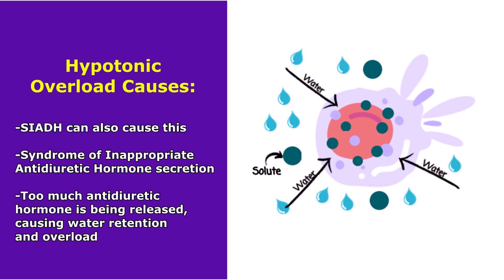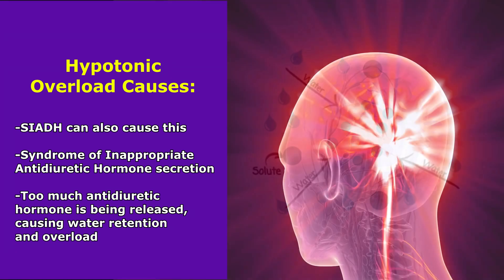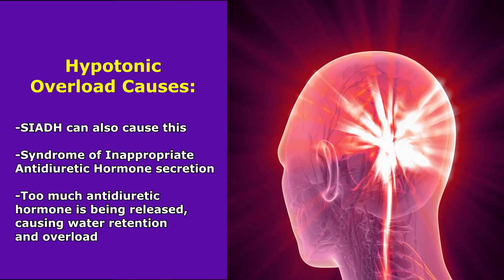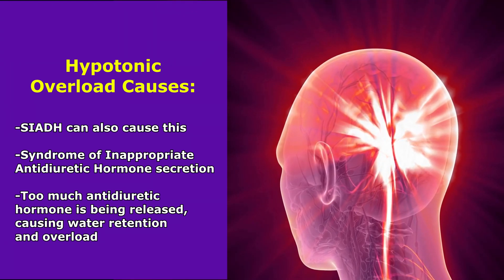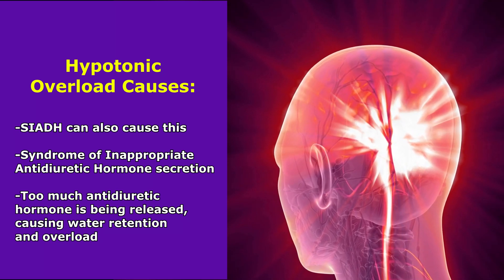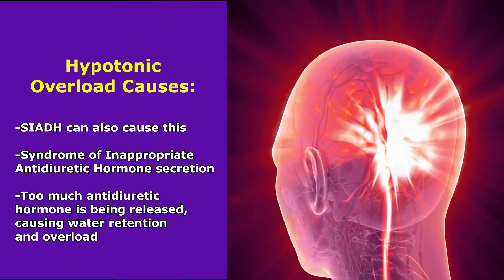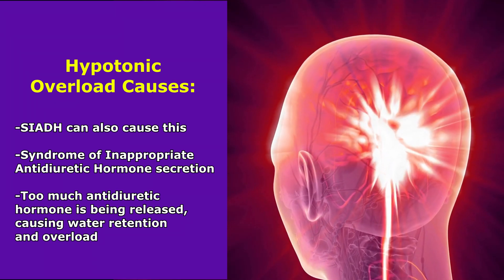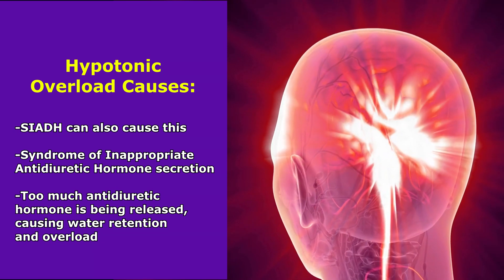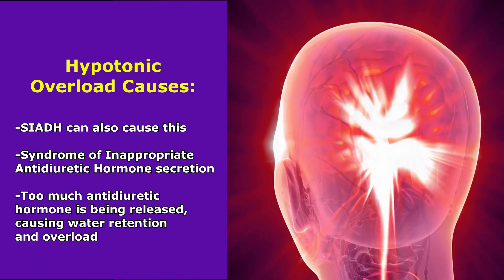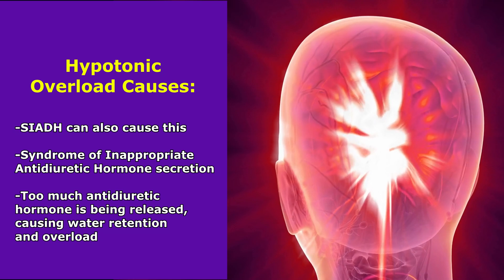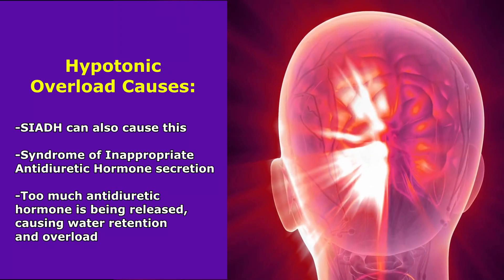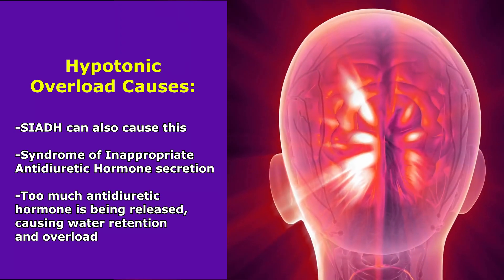SIADH — syndrome of inappropriate antidiuretic hormone — can also cause this. This is where there's too much antidiuretic hormone, also referred to as ADH, being released. Whenever we have too much ADH on board, we're retaining way too much water, leading to fluid volume overload and diluting everything — especially sodium — in the extracellular compartment.